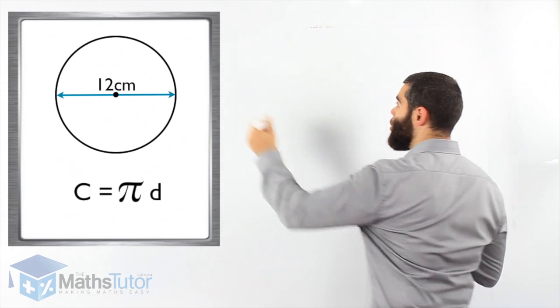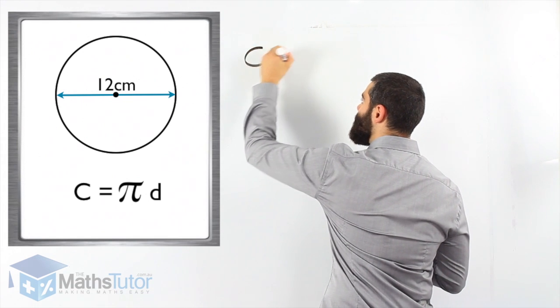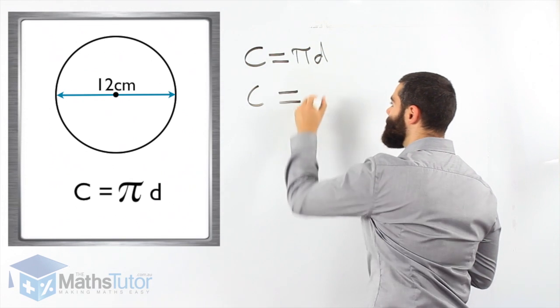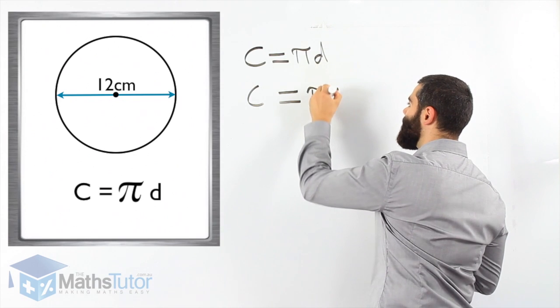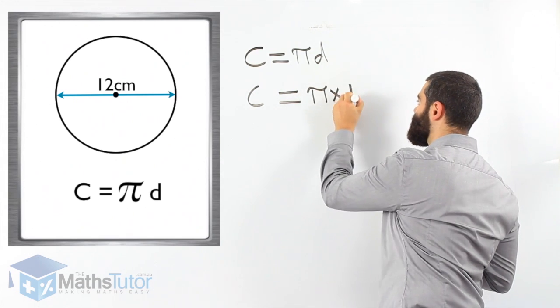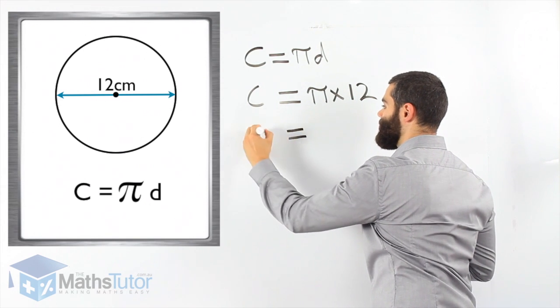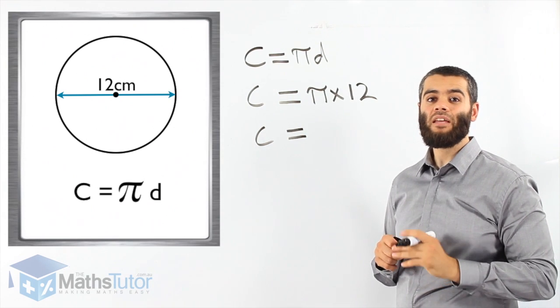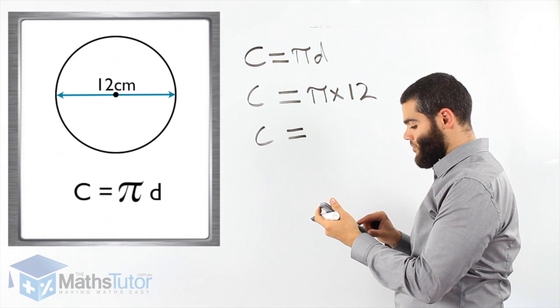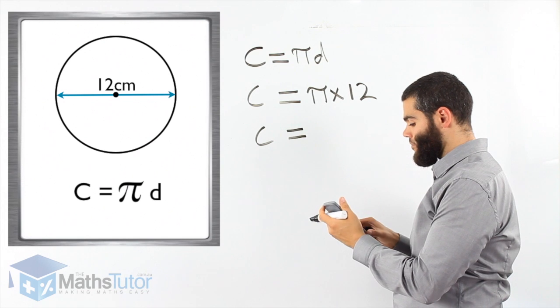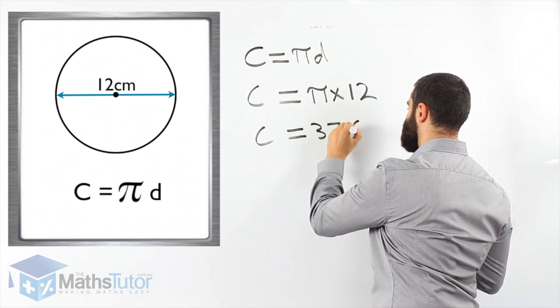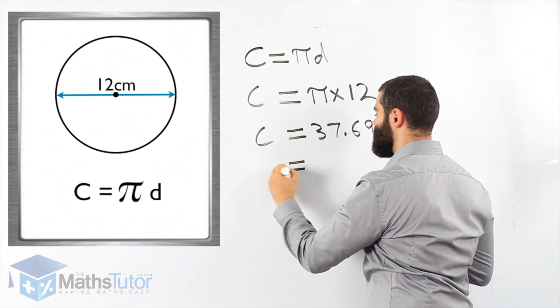Always write your formula. C equals πd. C is our circumference, π we're going to write, put it in our calculator, times our d. Our d is our diameter, in this case it is 12 centimeters. C, circumference, equals π times 12. Grab your calculator, here let's actually do it, and 37.699.